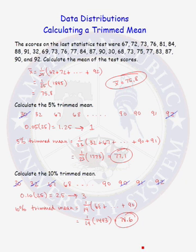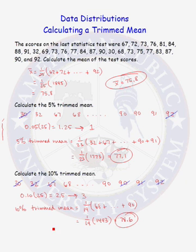So our mean was 75.8, the 5% trimmed mean increased to 77.1, and the 10% trimmed mean increased further to 78.6. It increased each time because we were removing these two very low test scores.